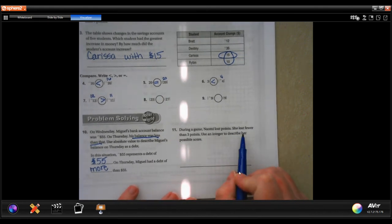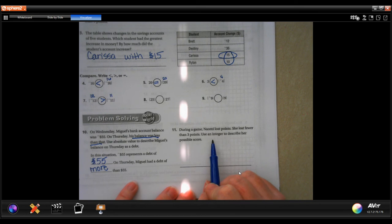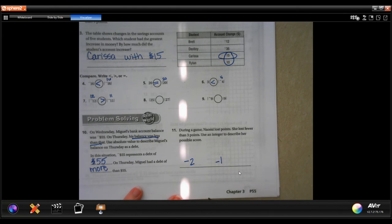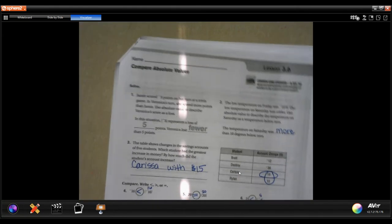During the game, Naomi lost points. She lost fewer than three points. Use an integer to describe her possible score. Well, she lost points but less than three points. She could have lost two points and she could have lost one point. You can write either one of those and be perfectly correct.